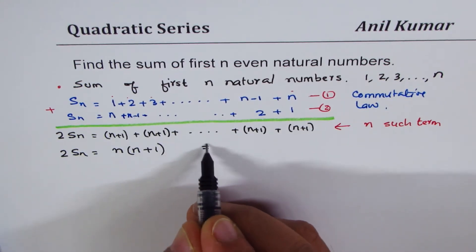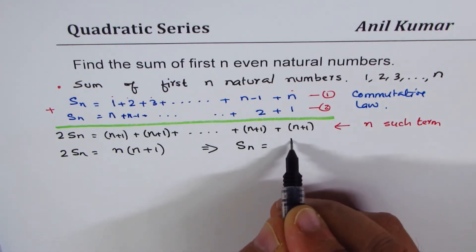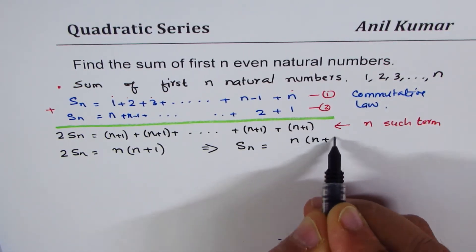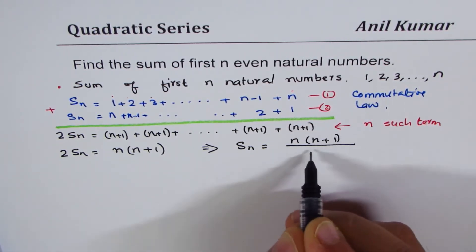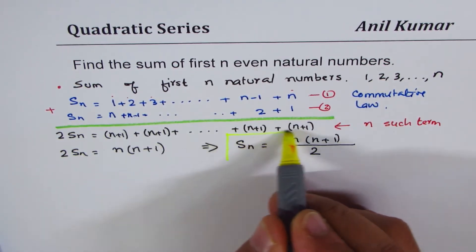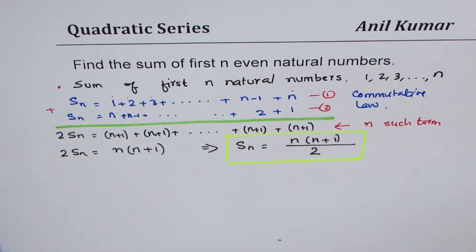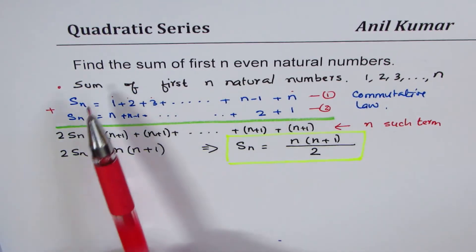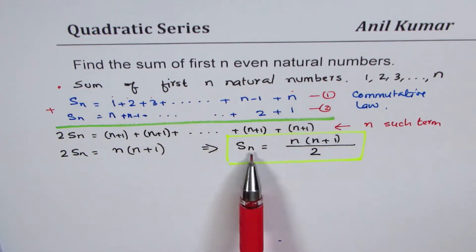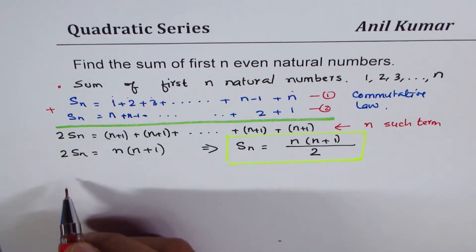So, from here, what do you get? Sum of n natural numbers is n times n plus one, bracket close, divided by two. So, this is a very important formula, which is known to many of my students. They may begin from here. So, that's the sum of natural numbers. Sum of first n natural numbers is all this. n times n plus one, divided by two. Now, let's get back to our real question.